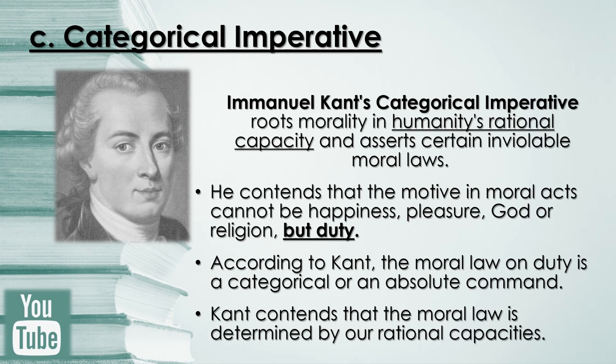For Kant, to live a moral life is to live in accordance with the laws of reason. Kant argues that this command is true, valid, and binding because it is beyond experience — since morality for Kant is a priori. Therefore, the command to live a moral life of obeying the laws of reason is a must. Kant contends that the moral law is determined by our rational capacities — man as a rational being imposes the moral law upon himself. This implies that the moral law is man's own creation, not God's.